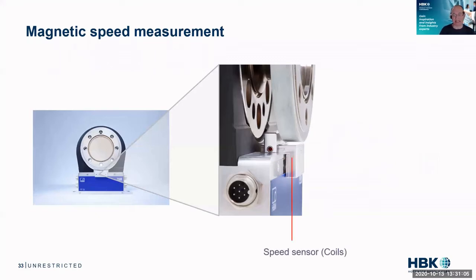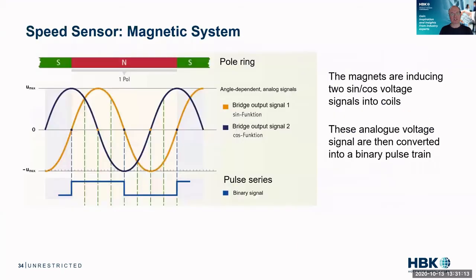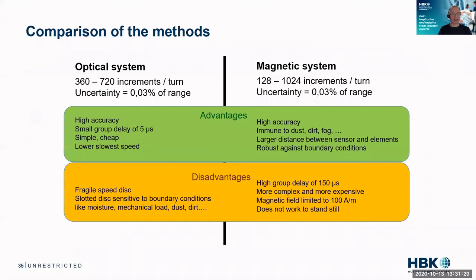Or you do it magnetically, which means you need a magnetic sensor, coils, a reference pulse sensor, and a pole ring with magnets. These magnets generate two sine waves as they pass by the coils, and then you need electronics to convert these sine/cosine signals into a pulse series.